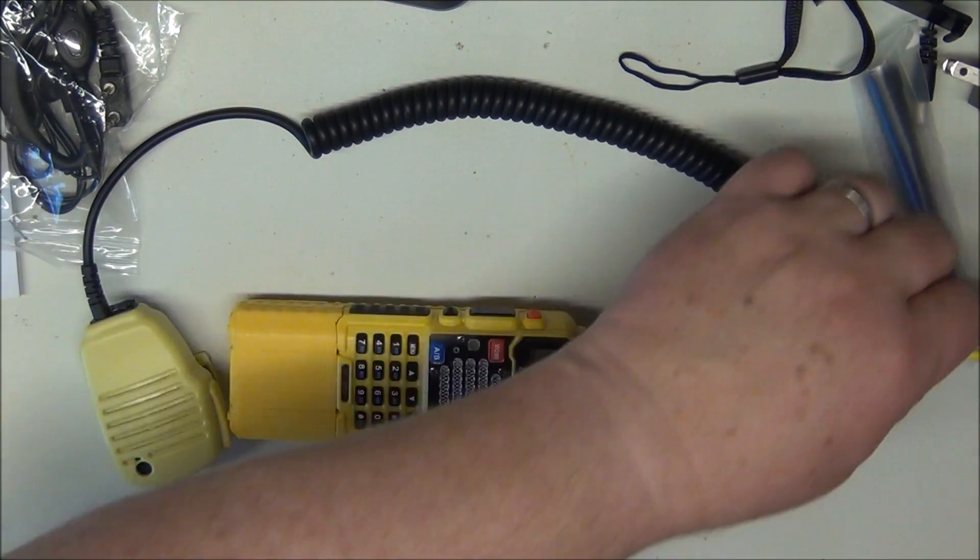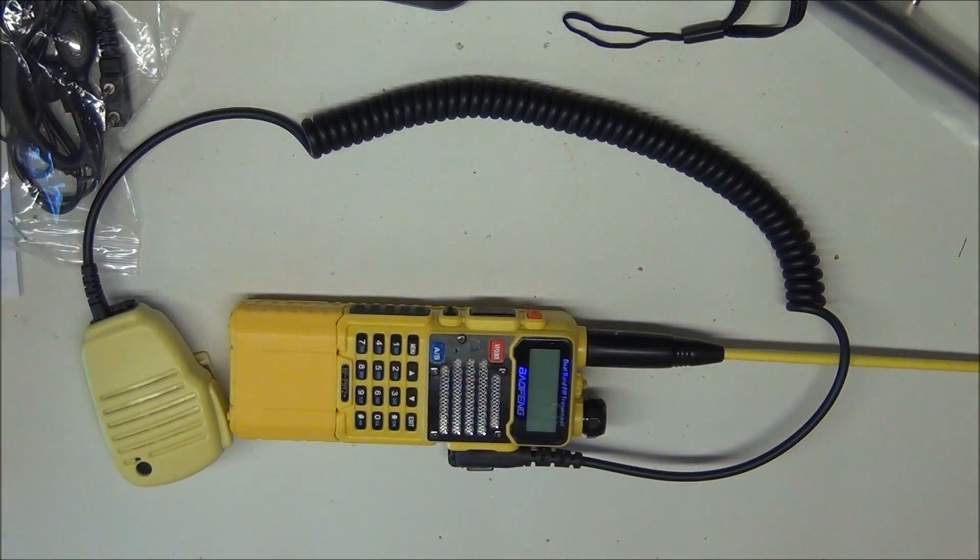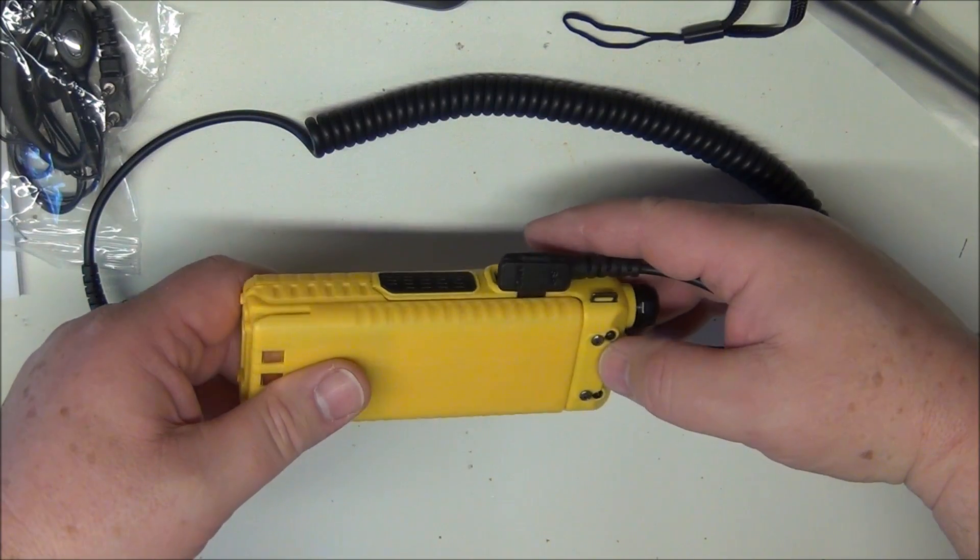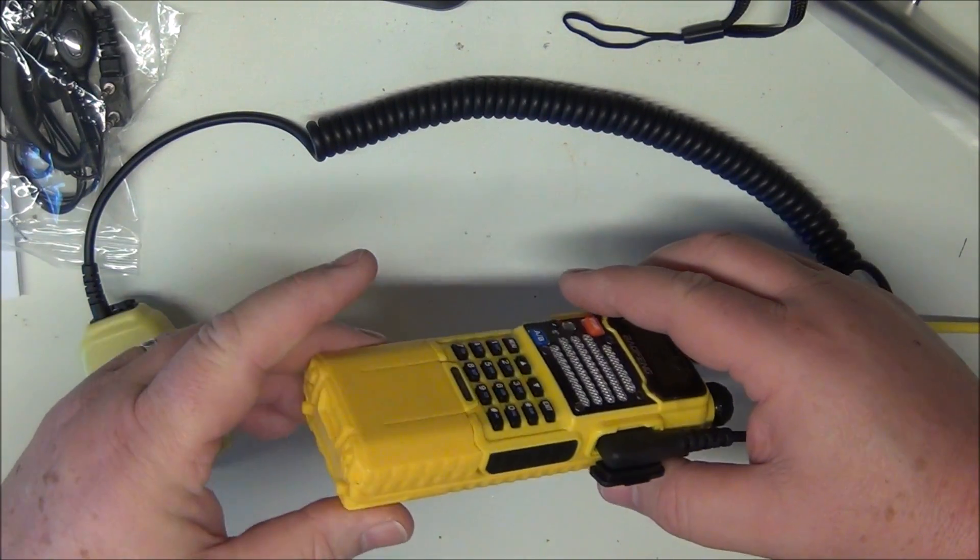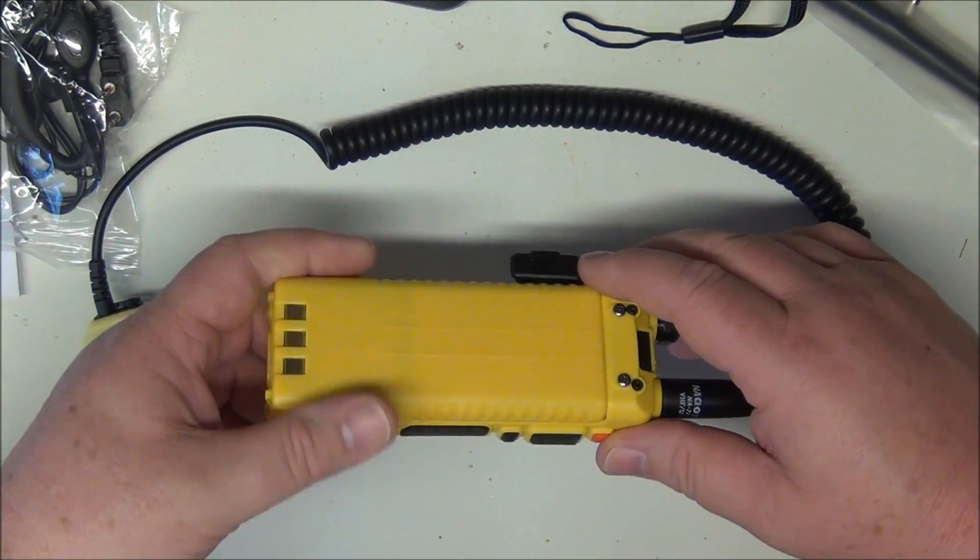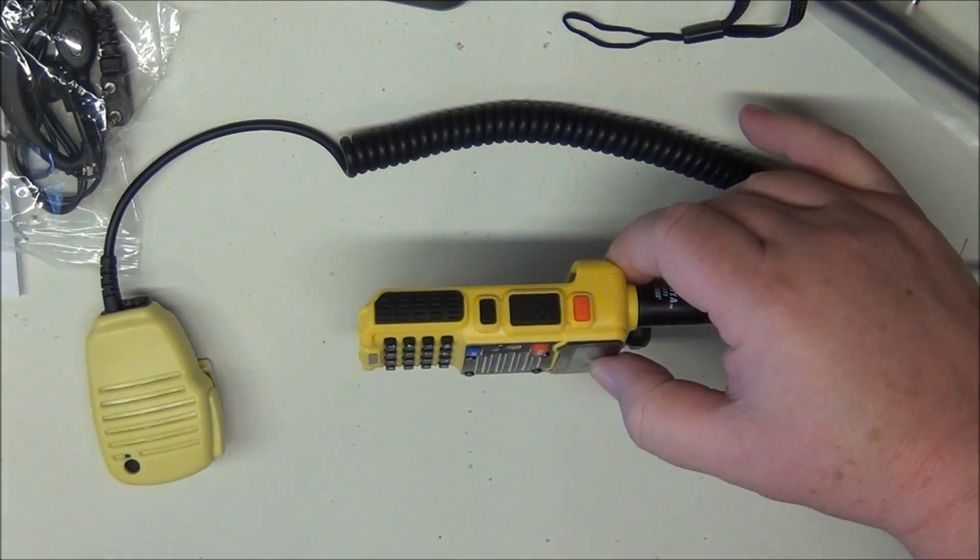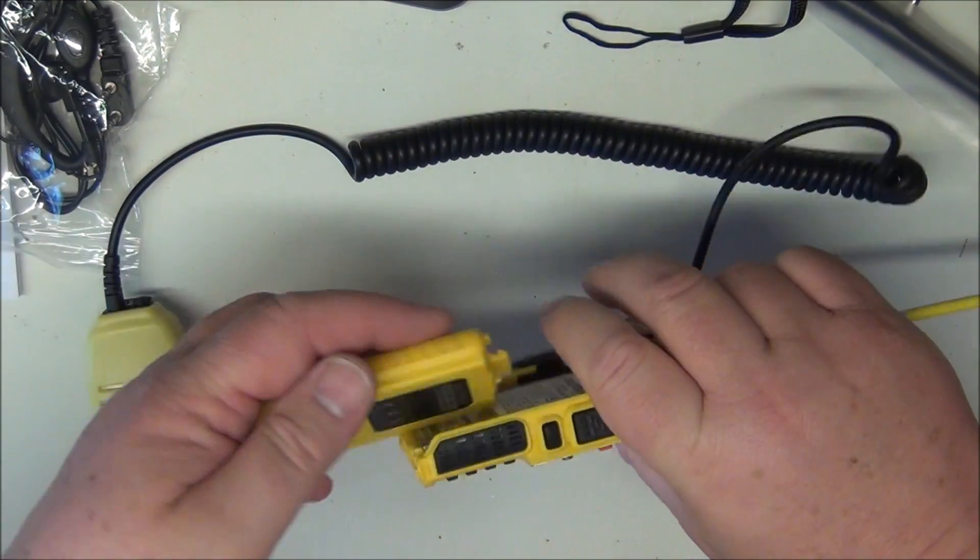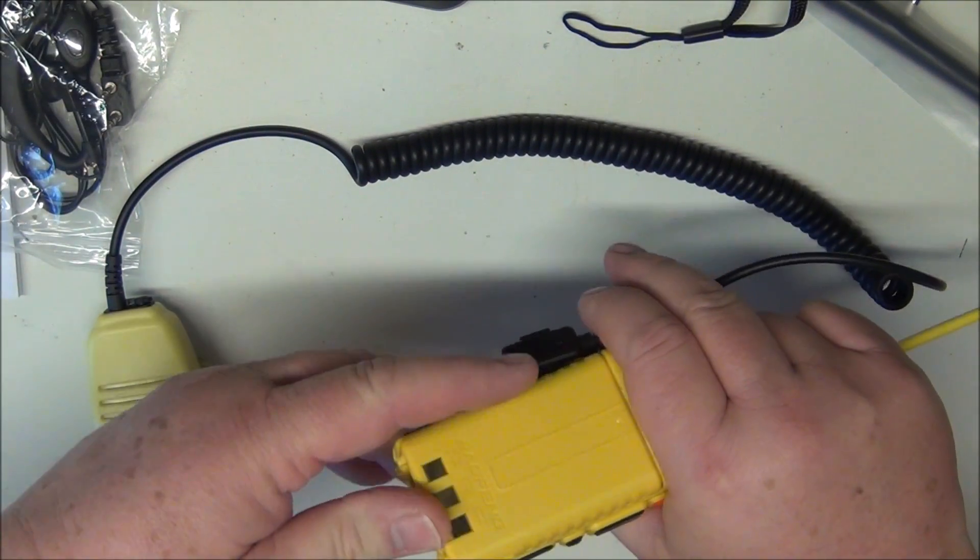The new Baofeng BF-F9 version 2 plus definitely works with all of the existing UV5R accoutrements. There's the original battery.